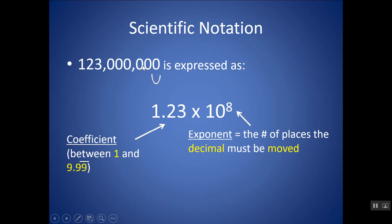If I look at this number, the decimal — if there is no decimal — would have been at the end of the number. This is a number much larger than 1. If I think about trying to move this decimal until I get a number between 1 and 9.999, I'd have to move it 8 places. So to create this coefficient, I moved the decimal 8 places, and that's why 10 has this exponent of 8. I always have this coefficient times 10 to an exponent.